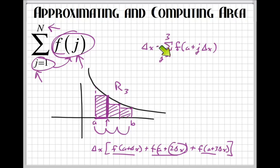The first time you plug in one, you would get this. The second time you would plug in two, you would get this, and you get two delta X. Next time you would plug in three, you would get three delta X. So, that is the intro to summation notation when approximating and computing the area underneath the curve.